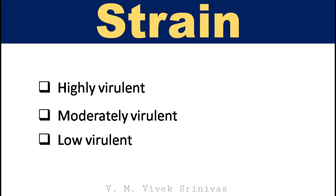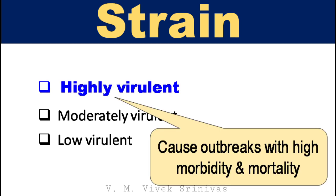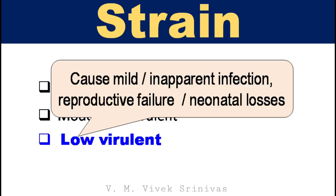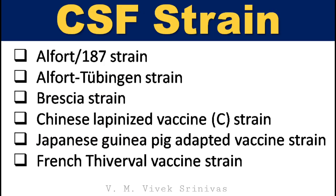This virus is classified based on virulence into 3 strains: highly virulent strain, responsible for outbreaks with high morbidity and mortality; moderately virulent strain, responsible for subacute or chronic infections; and low virulent strain, responsible for mild or inapparent infection that may lead to reproductive failure or neonatal losses. Some notable classical swine fever virus strains include Alford 187 strain, Alford Tübingen strain, Brescia strain, Chinese lapinized vaccine strain (also called C strain), Japanese guinea pig-adapted vaccine strain, and French Thiverval vaccine strain.